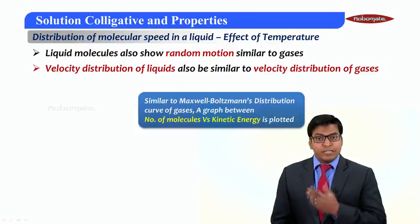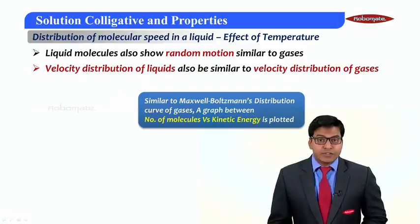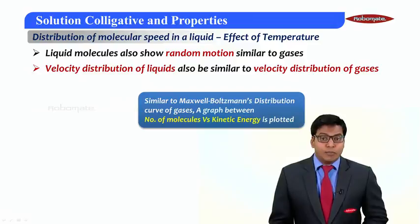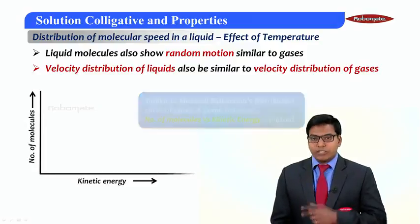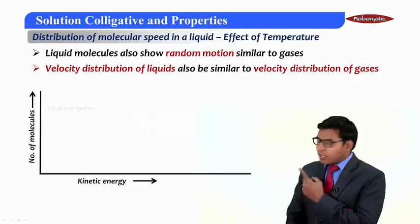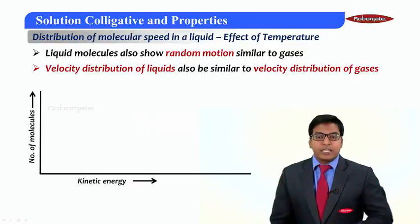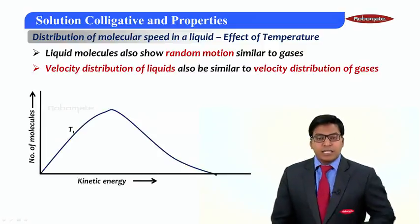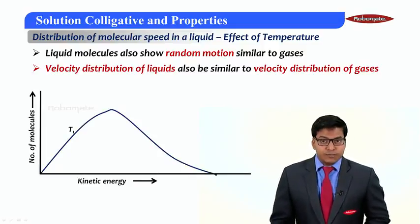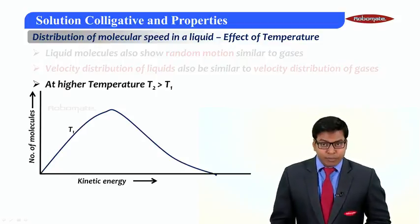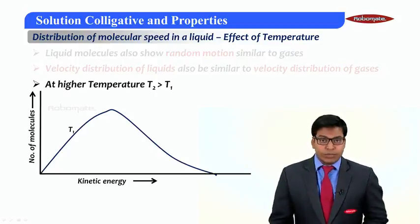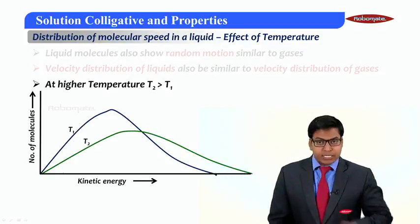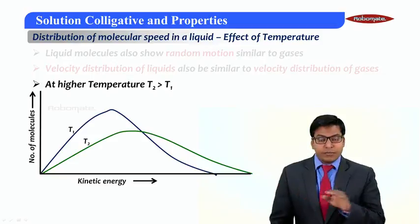This is because of Maxwell's Boltzmann distribution, which is a plot between number of molecules versus kinetic energy. If we plot that, at a certain temperature T1, this is how the graph varies. This was a similar graph for gases also. Similarly, if I increase the temperature to T2, the peak will start coming down and it will start becoming more uniform.